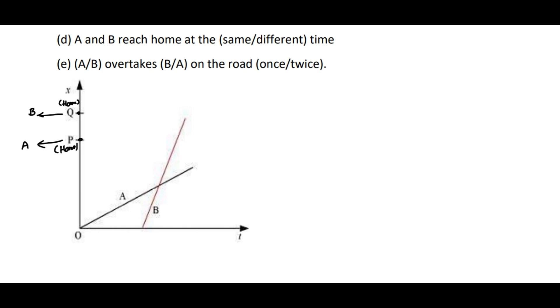If you observe, this graph is related to A and this graph is related to B. Both are straight lines. But if you observe, the slope of B is more than the slope of A.